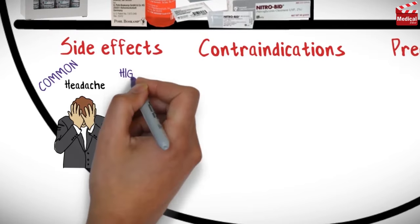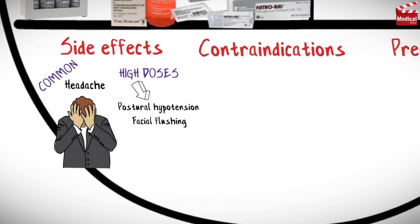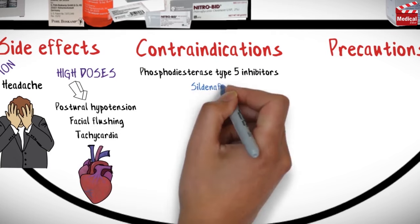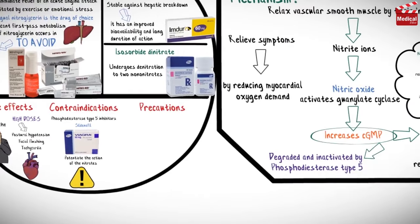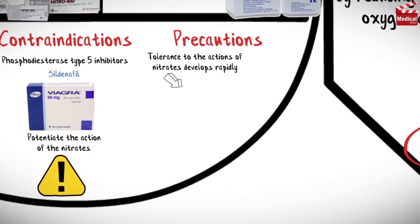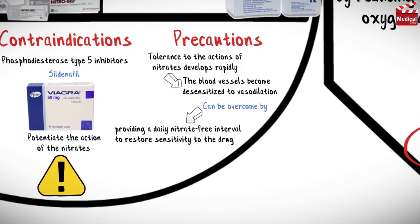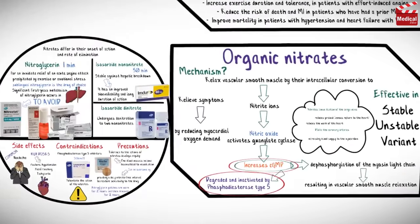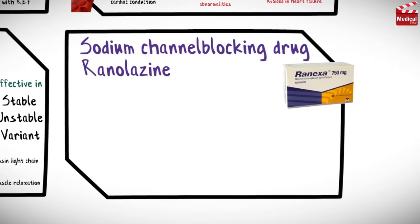Regarding side effects and contraindications: headache is the most common adverse effect of nitrates, and high doses can cause postural hypotension, facial flushing, and tachycardia. Phosphodiesterase type 5 inhibitors such as sildenafil potentiate the action of nitrates by inhibiting the enzyme that deactivates cGMP, so this combination is contraindicated. Tolerance to nitrates develops rapidly as blood vessels become desensitized to vasodilation; this can be overcome by providing a daily nitrate-free interval — for example, nitroglycerin patches worn for 12 hours and removed for 12 hours.